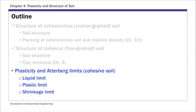In the next topic for today, this is really the core of chapter 4 — plasticity and Atterberg limits. For plasticity and Atterberg limits, we focus specifically on cohesive soil. So basically we're talking about plasticity and Atterberg limits of clays. There are three types of Atterberg limits: liquid, plastic, and shrinkage limit. We're going to go over this in detail in today's lecture.